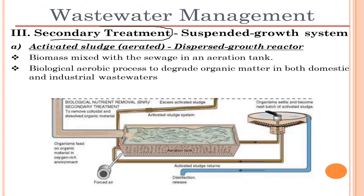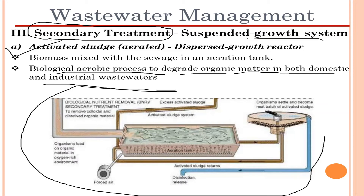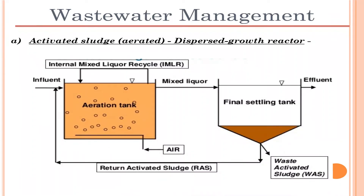Moving to the second type of system — suspended growth systems — the first is activated sludge, also called the dispersed growth reactor. In this system, the biomass is mixed with the sewage in an aeration tank. It is a biological aerobic process to degrade organic matter in both domestic and industrial wastewaters. Aerobic decomposition takes place in the presence of excess oxygen to decompose organic substances.